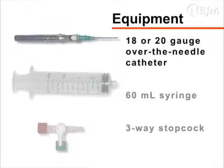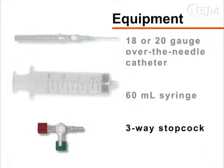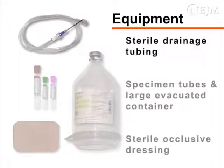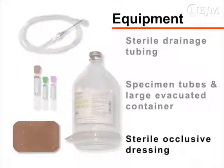For the collection of pleural fluid, you will need an 18 to 20 gauge over-the-needle catheter, a 60 milliliter syringe, and a 3-way stopcock. You will also need sterile drainage tubing, specimen tubes and a large evacuated container, and a sterile occlusive dressing.